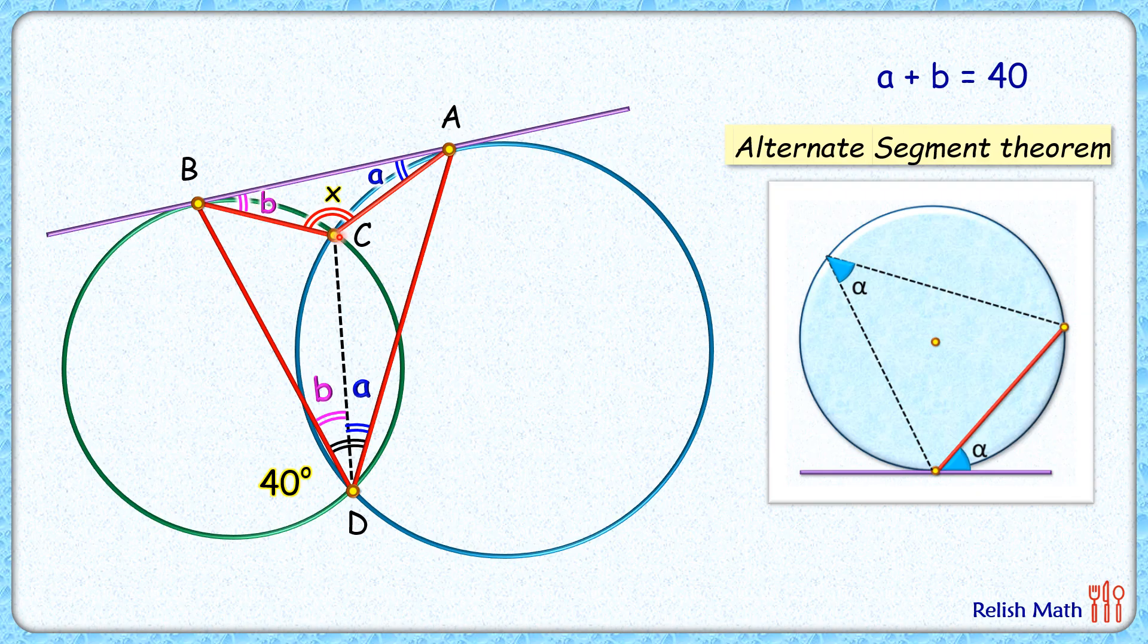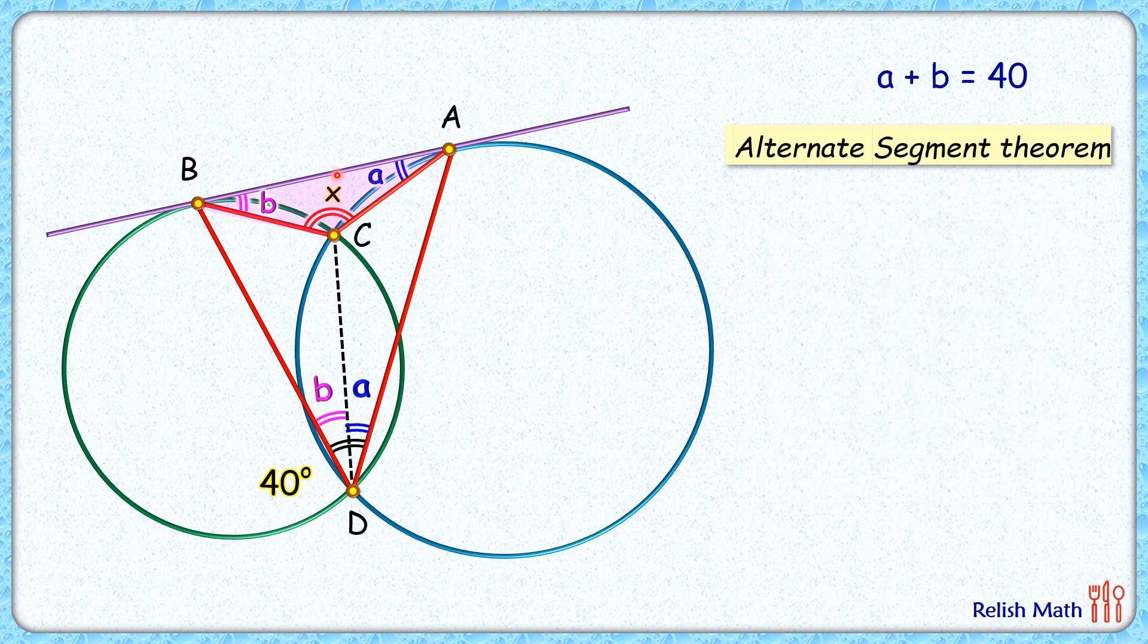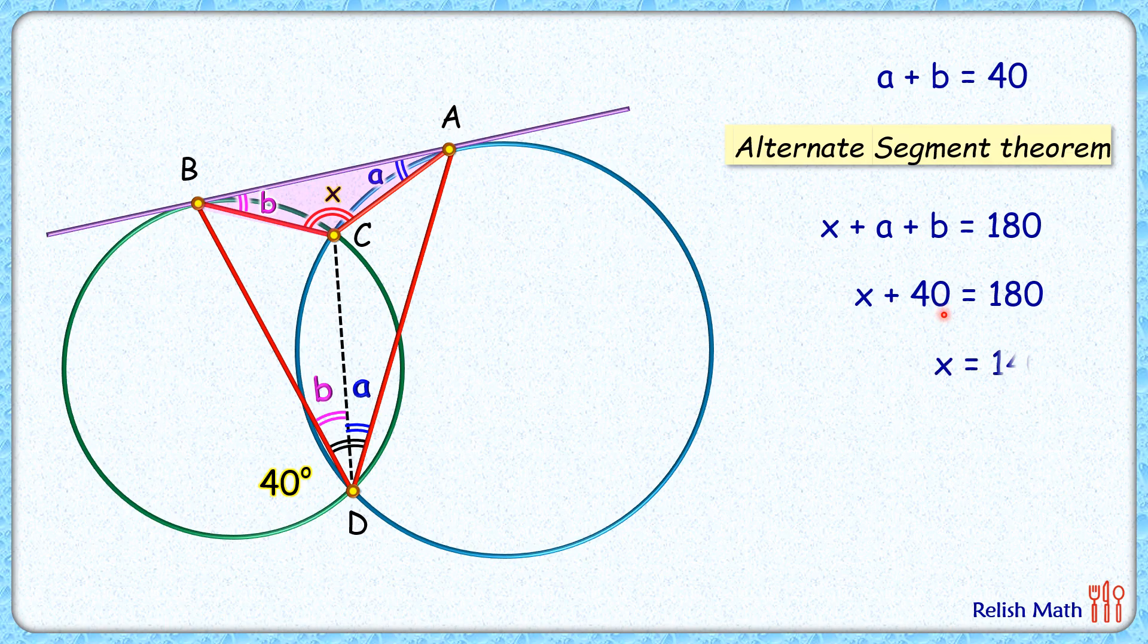And this triangle ABC, that is this pink triangle, if we apply angle sum property we'll get x plus a plus b is 180. A plus b, that's 40 degrees, and thus value of x is 140 degrees and that's our answer. I hope you enjoyed the solution. I will see you in the next video. Till then, ta-da, bye bye.